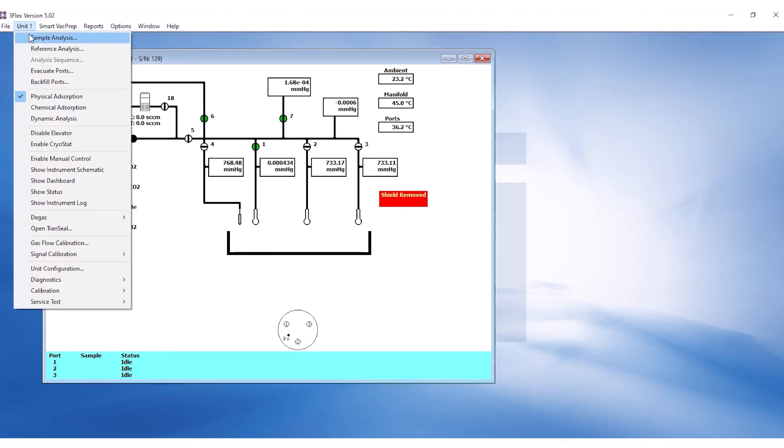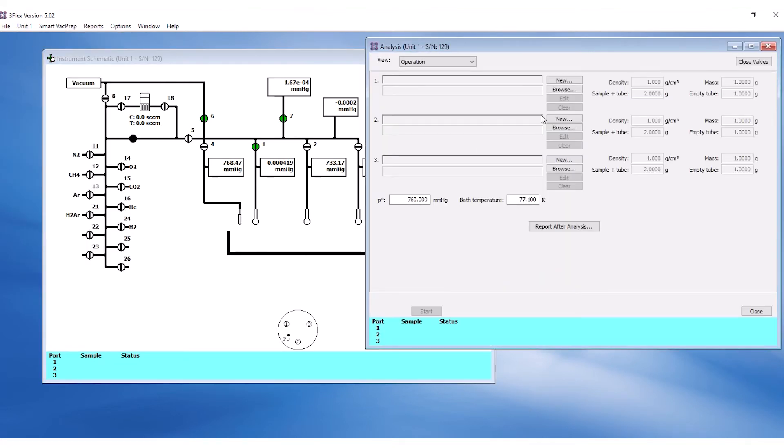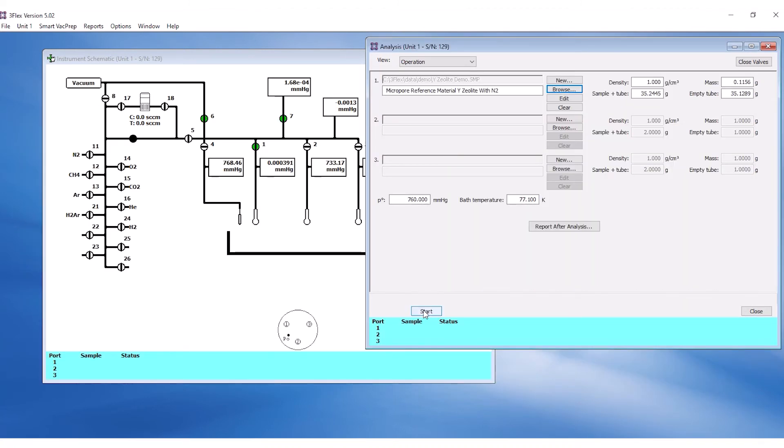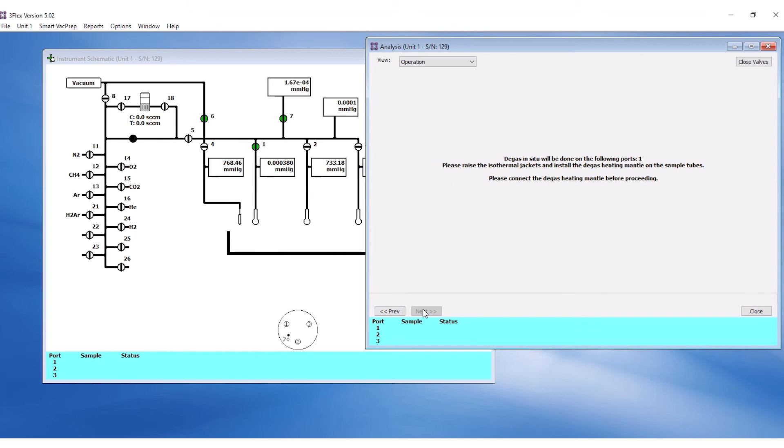To begin analysis, click on the unit menu Sample Analysis. Load the correct sample file for each port and click Start. Since degas in situ is selected, the software will instruct to install the heating mantle at the start of the analysis.